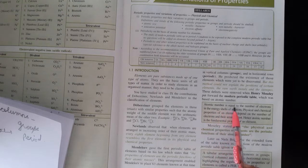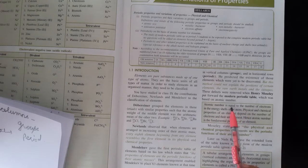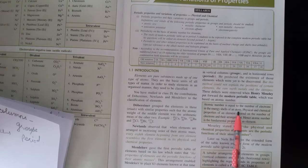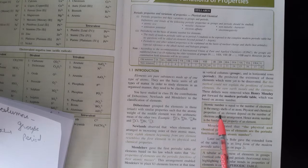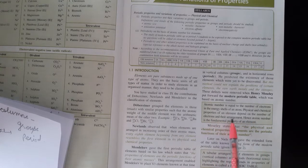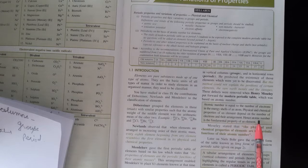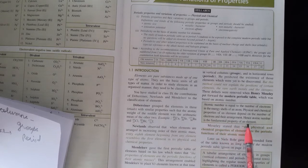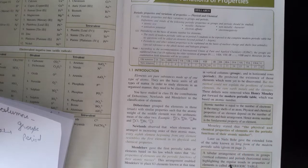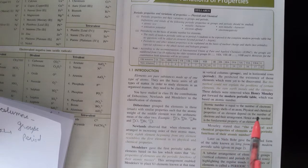Atomic number is equal to the number of electrons in the energy shell of an atom. Physical and chemical properties of an element depend on the number of electrons and their arrangement. Hence atomic number is the fundamental property of an element. So what did they say? The fundamental property is atomic number, not the mass.